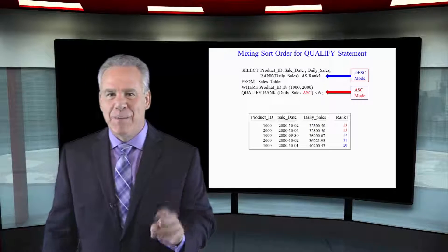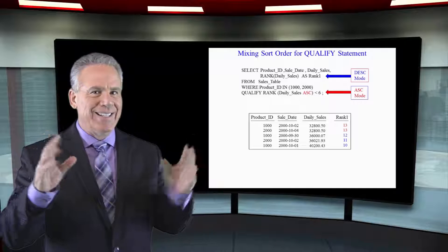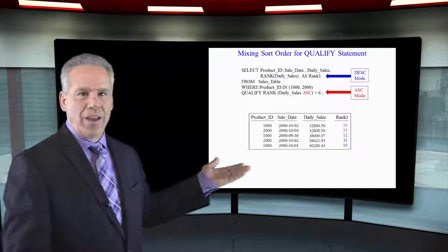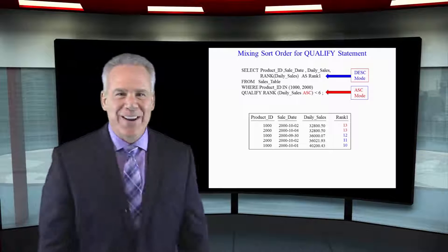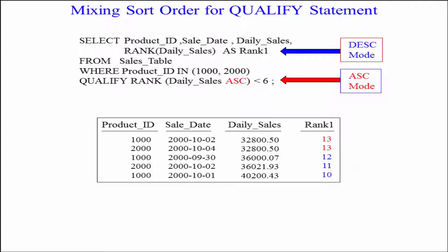Try not to mess up what you have in your select list as a rank and your qualify. As you can see right here, we've got our select list that has a rank that is in descending order, but our qualify has the rank less than six in ascending order.